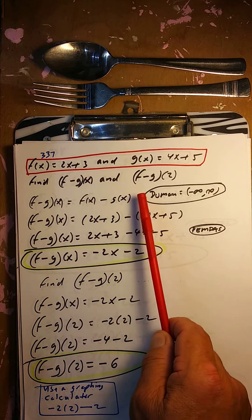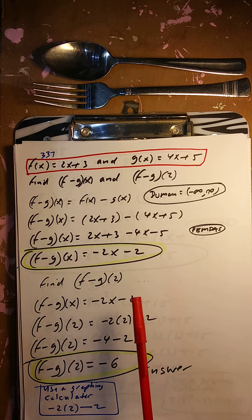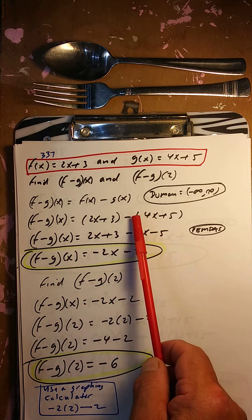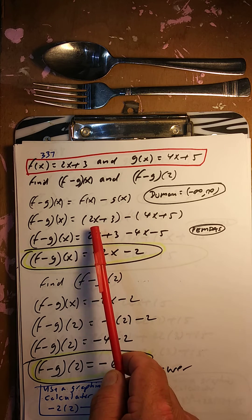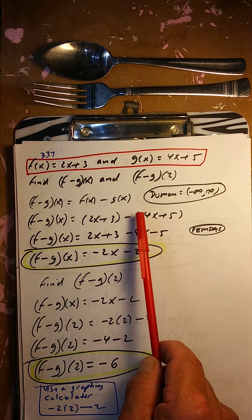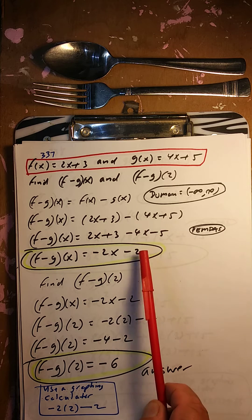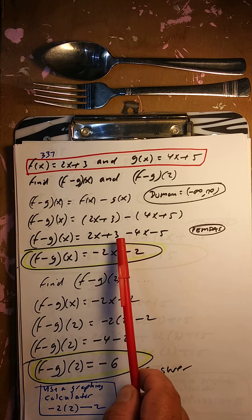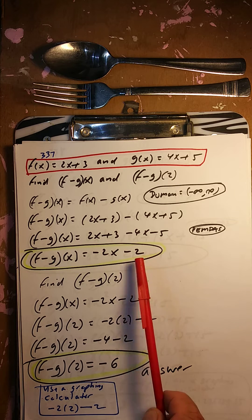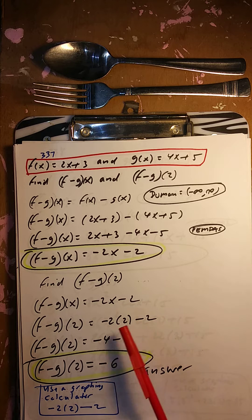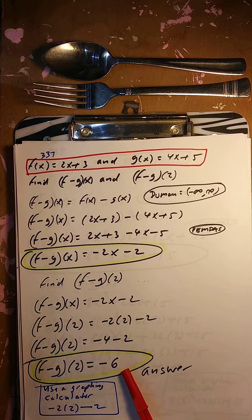Subtract: find f minus g of x, then find f minus g of 2. f minus g of x is f of x minus g of x. So 2x plus 3 minus the quantity 4x plus 5. The minus sign changes the signs: negative 4x and negative 5. So 2x minus 4x is negative 2x, and 3 minus 5 is negative 2. So f minus g of x is negative 2x minus 2. Now f minus g of 2: substitute 2. Negative 2 times 2 is negative 4, minus 2 more gives negative 6. So f minus g of 2 equals negative 6.